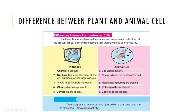Cell wall is present in plant cells but it is absent in animal cells. In plant cells, the nucleus lies near the side of the cell because of a large vacuole, as you can see in this diagram. But in animal cells, nucleus lies in the center of the cell. Also, a single large vacuole is present in plant cells, but in animal cells many small vacuoles are present.